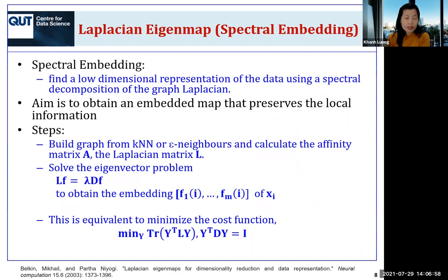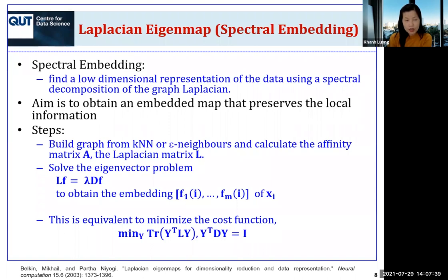The third approach is called Laplacian eigenmap or spectral embedding. This method aims to obtain an embedded map that preserves local information by finding a low dimensional representation using spectral decomposition of the graph Laplacian. The steps include: build a graph from KNN or epsilon neighbors, calculate the affinity matrix A, then the Laplacian matrix L, then solve the eigenvector problem to obtain the first m eigenvectors. The first m eigenvectors form the new embedded space. This is equivalent to minimizing a cost function very similar to spectral learning, which is why this approach is called spectral embedding.